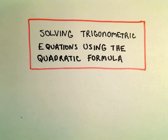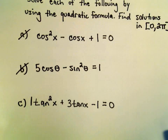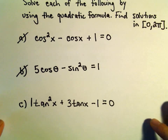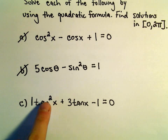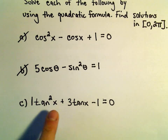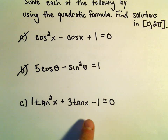In this video we're going to do one more example of solving a trig equation by using the quadratic formula. We're going to solve 1 tangent squared x plus 3 tangent x minus 1 equals 0.